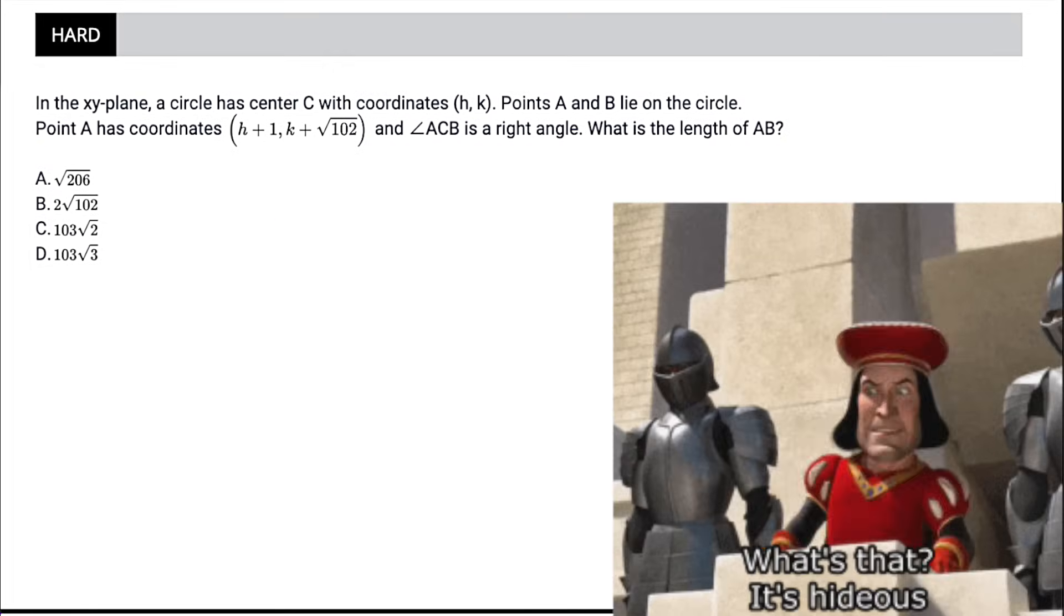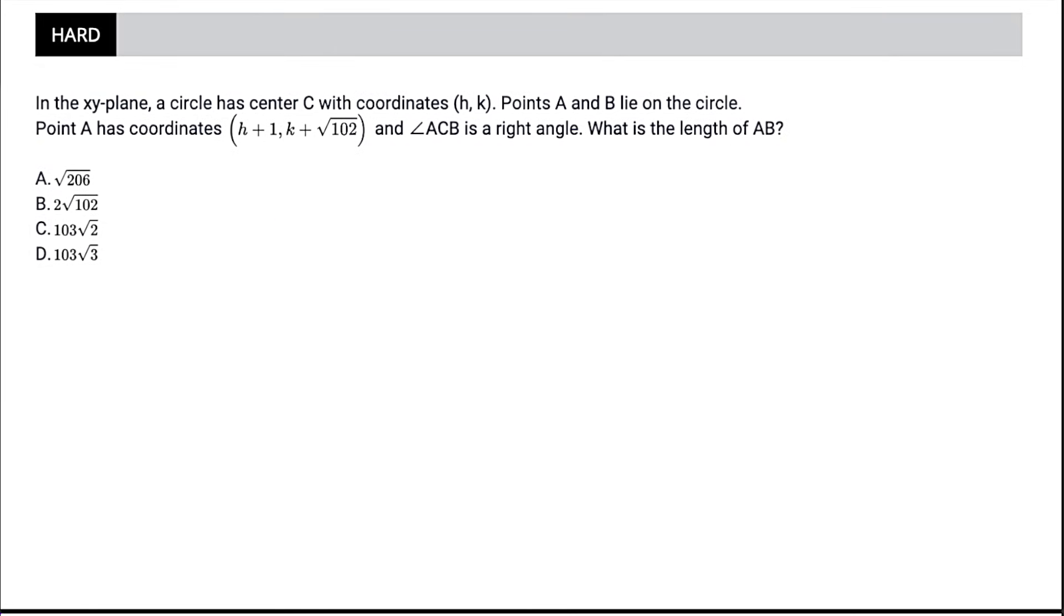Pause the video and try this hideous circle slash triangle question on your own first, but here we go. So they give us information about a circle that has center coordinates h, k. And because we don't have to solve for h or k, they're just relative points, let's make it easy and make these points 0, 0. So we've got this point 0, 0, which is c. And then point a, which had h plus 1, since h is 0, this is just 1. k plus square root of 102, this is just square root of 102. Let's think it's going to be like over to the right, 1 plus square root of 102 up. So somewhere over here, we have this point 1, square root of 102. Draw our line here, and this is point A.